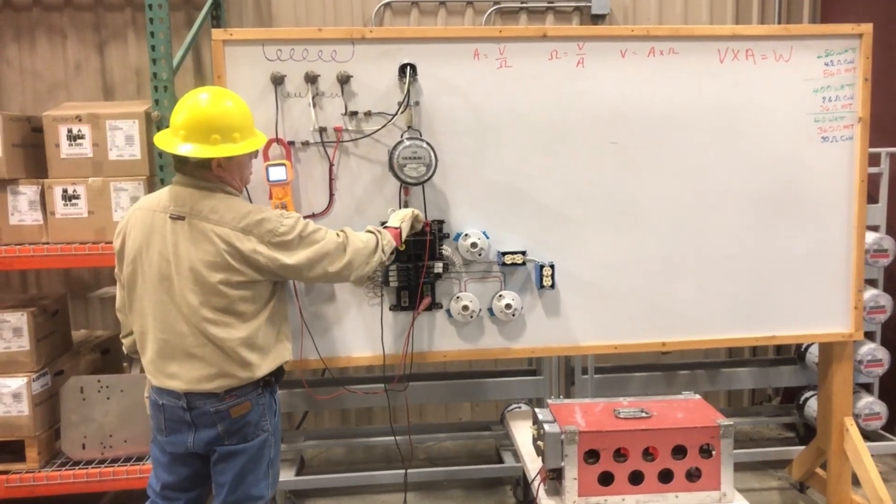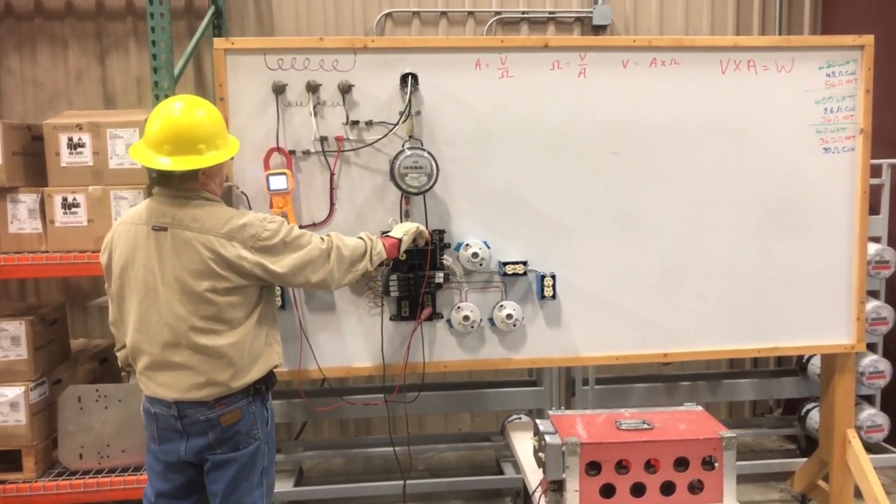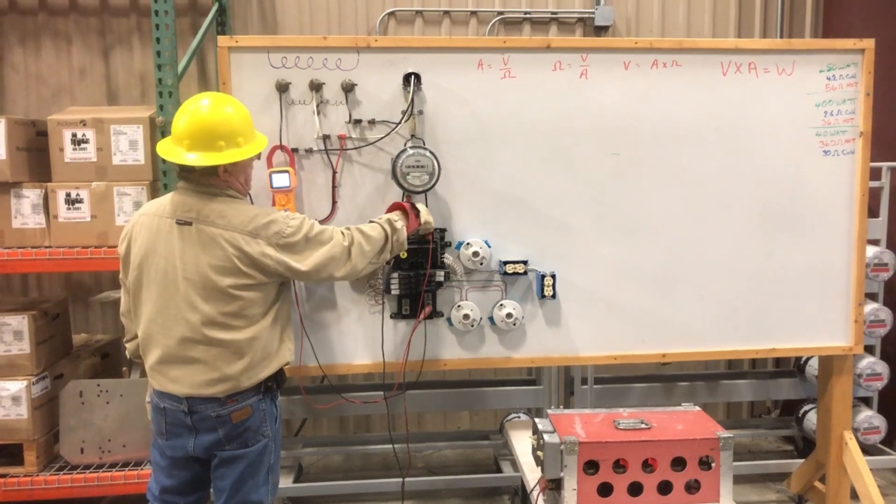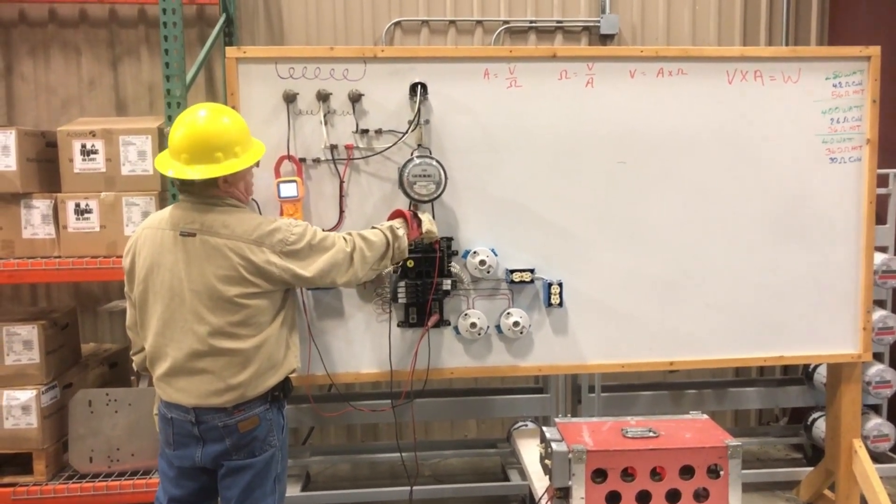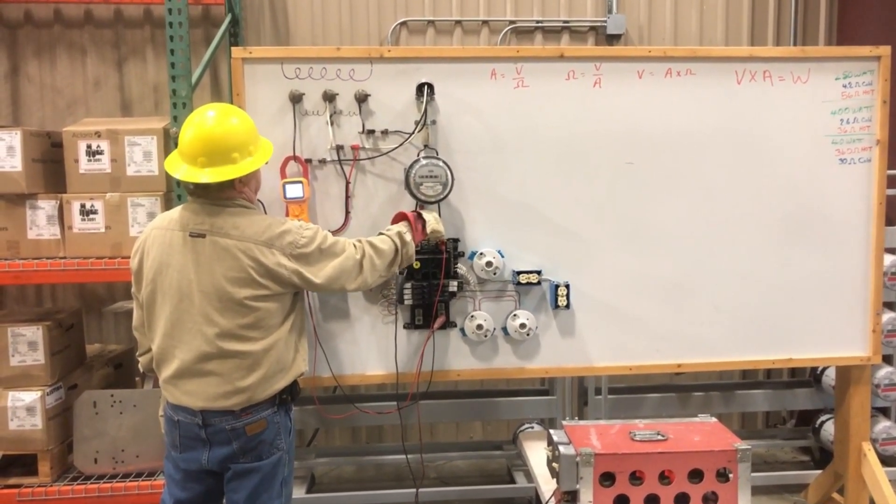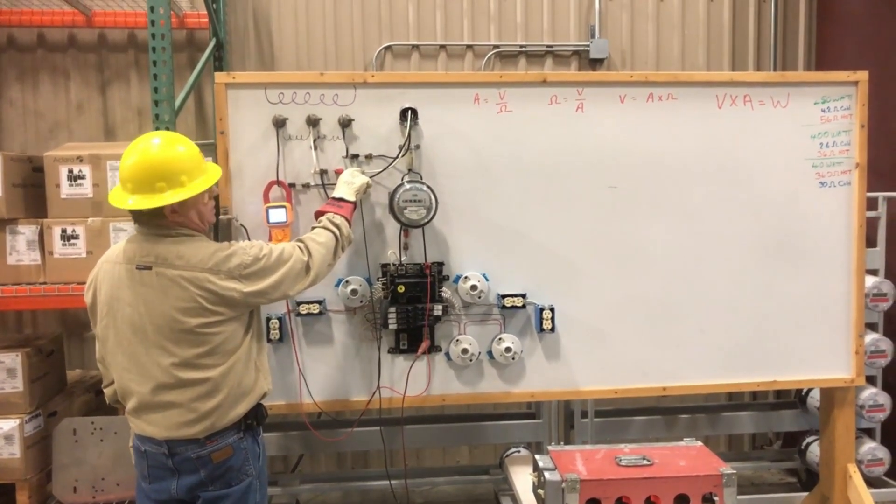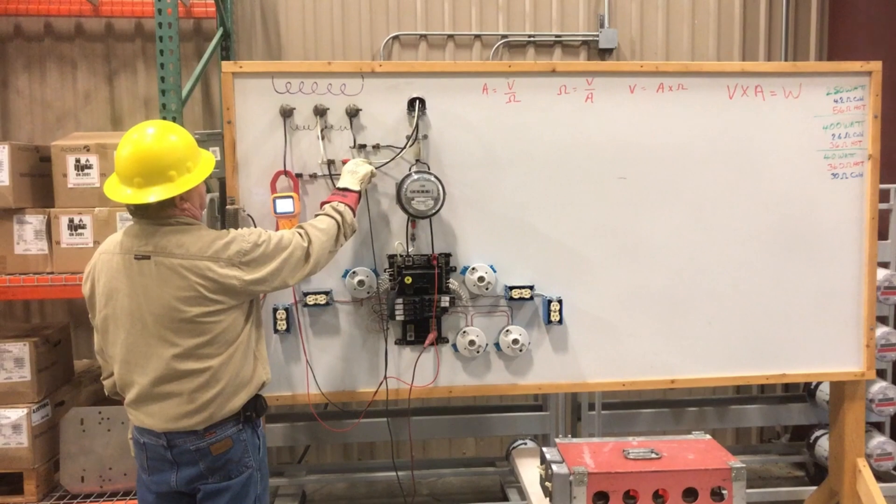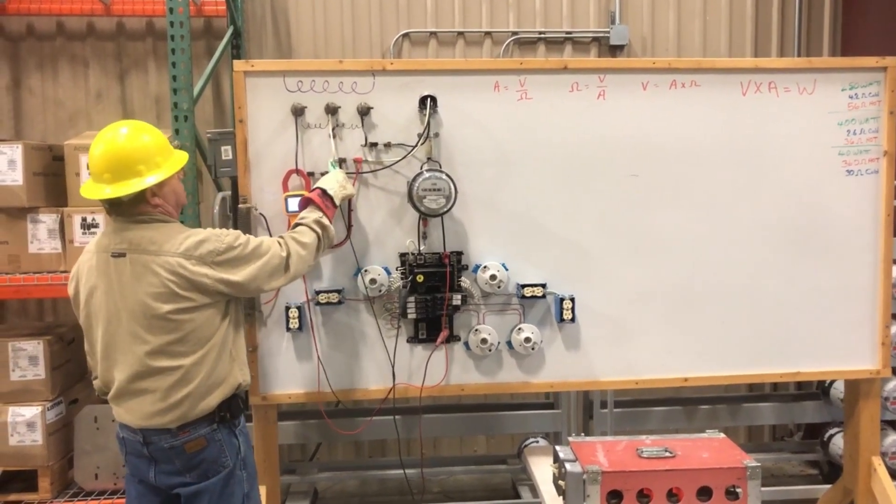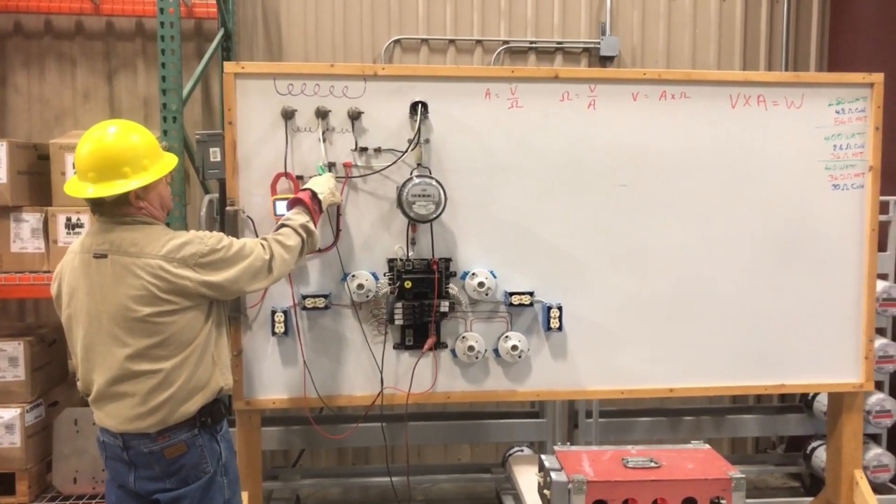So we're going to go from here. We see 88. We go to this bypass that I put in where I can actually open. Still there. We're going to go to the high side of that resistor or what I call the low side. 88. Now we're going to go to the other side of the resistor and we see 113.